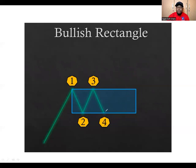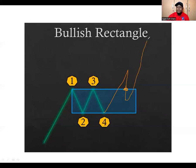Sometimes the break may happen and the retest may not land exactly on the one and three support — it may break through that support and come deep into the rectangle, making you believe the support didn't hold. But then you see the reversal taking place and the trade moves back up. These are all situations you may encounter in the market.